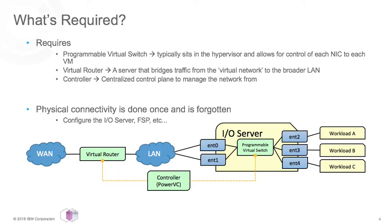That virtual switch has a set of rules applied to it provided by the controller. The controller — in this case PowerVC — has high-level policies defined within it, and it works with the virtual switch to send those rules down and compile them into low-level rules that the virtual switch can apply. These would be your QoS, security, or even overlay rules. Since you're virtualizing the network, certain types of traffic will be put on an entirely virtual overlay network. Therefore, you need some entity that can transform that virtual overlay network traffic and put it onto your wide area network. That is the role of the virtual router.